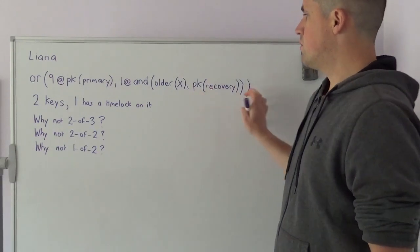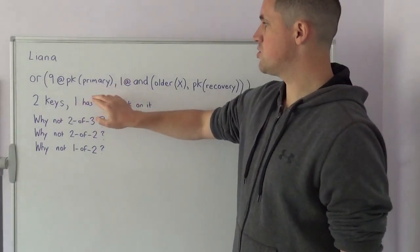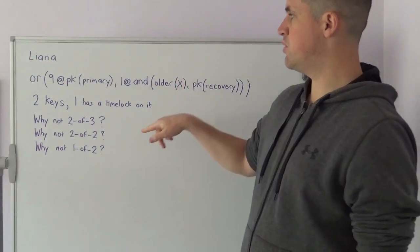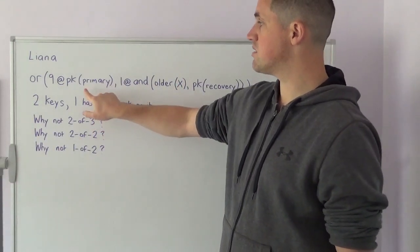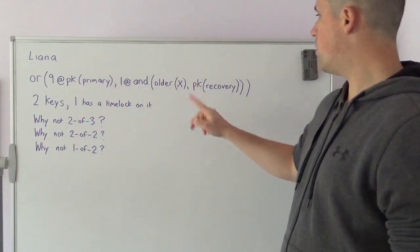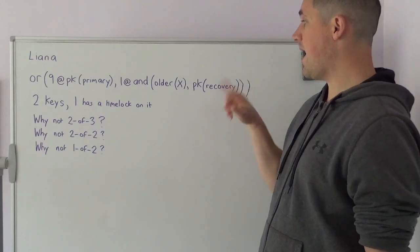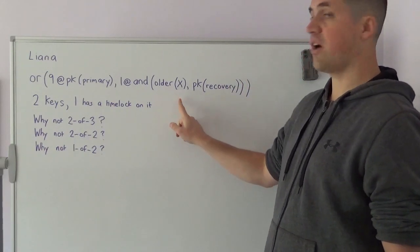What does this policy do? Well, it ensures that funds can only be moved from a certain address if you have a signature associated with a primary public key, or you have a signature associated with a recovery public key and a certain amount of time has passed.